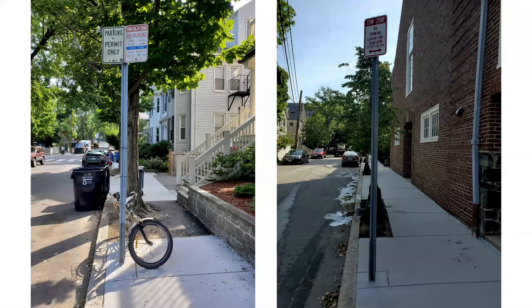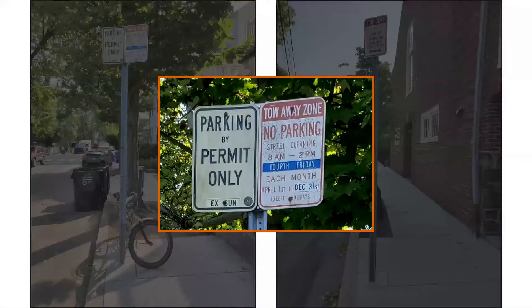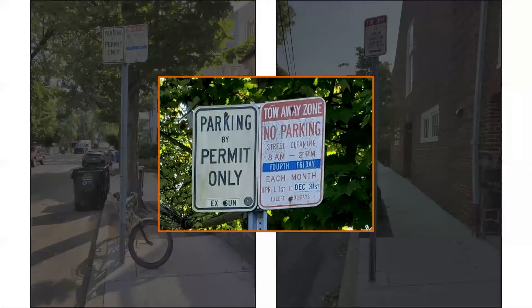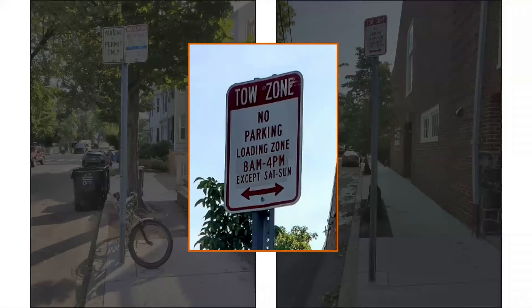Walking along the street, this is what you would see. On the left, you have a signpost with two signs that display the parking regulations at this location. Reading the signs, you will see that the regulations at this specific location vary through time. One sign is for parking by permit only, except on Sundays, and the other is for no parking on the fourth Friday of each month, during a certain part of the calendar year, during a specific time frame, except on Sundays. Further down the street, you have another signpost with a single sign for a loading zone that has its own time and day constraints.